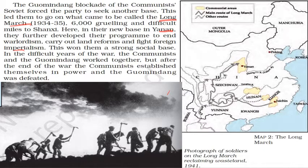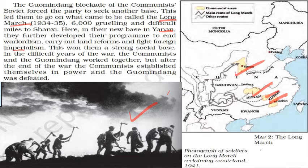This map shows the communist areas marked in yellow patches. These are the communist areas and the mountainous main routes of the Long March. You can see the symbols over here — the symbol of the mountains that marks the main route of the Long March. Other routes are marked in dots. This is the map showing the Long March. This photograph shows a soldier on the Long March, alongside reclaiming wasteland — that means they are reclaiming wasteland and trying to make it into cultivable land and find a new base.